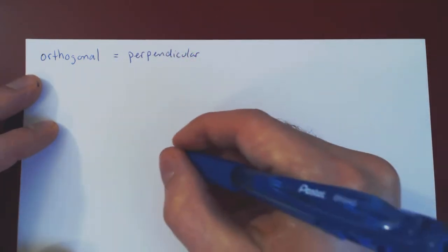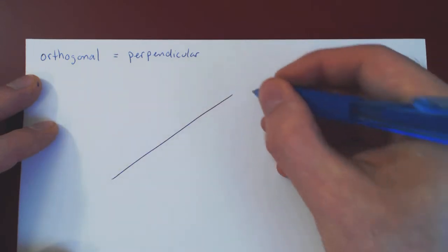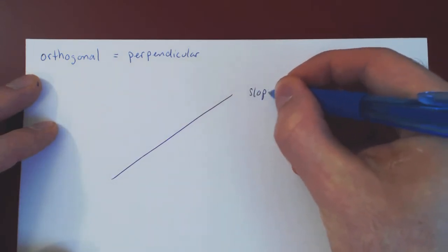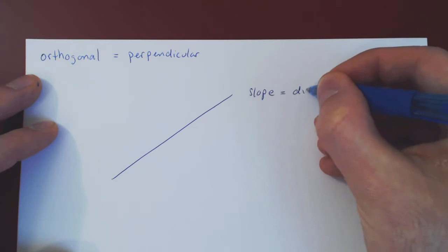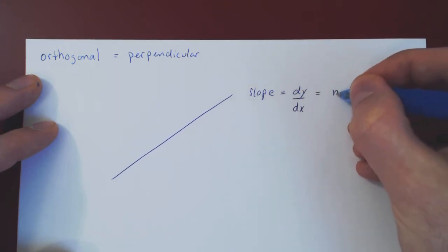So here's the situation. Suppose you have a line in the xy-plane. You can consider its slope. The slope, of course, is the derivative dy over dx. And suppose it is equal to m in this case.